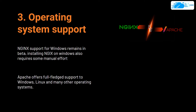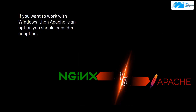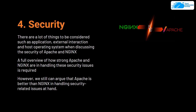The next category is operating system support. Nginx's support for Windows is still in beta stages, and installing Nginx on Windows requires some manual effort. Apache offers full-fledged support for Windows, Linux, and many other operating systems. In terms of OS support, it depends on your operating system — but if Windows is your choice, Apache is the clear winner.